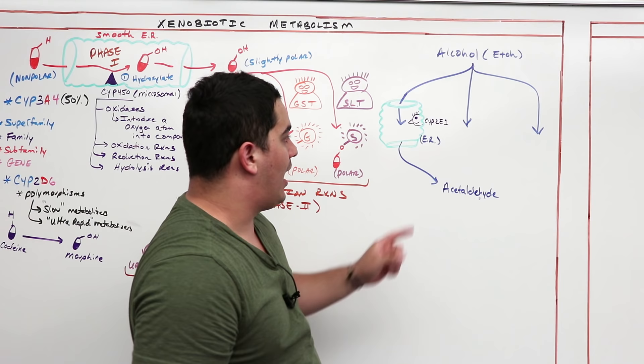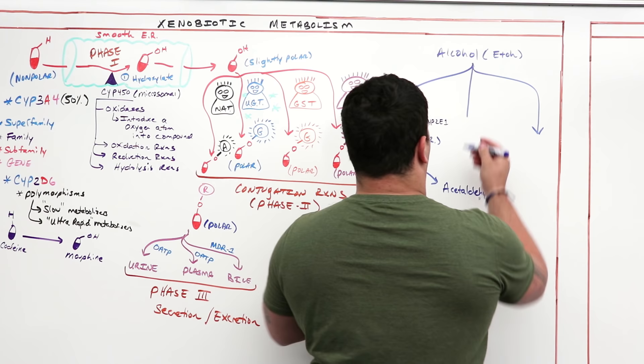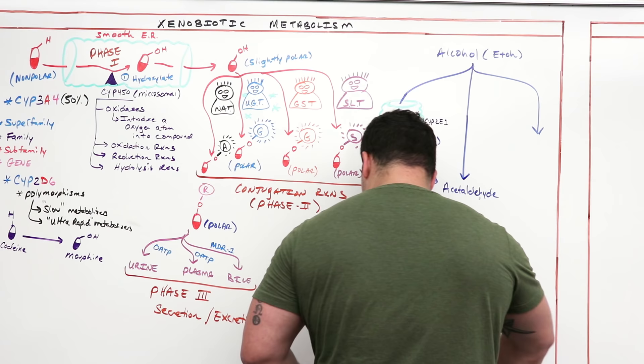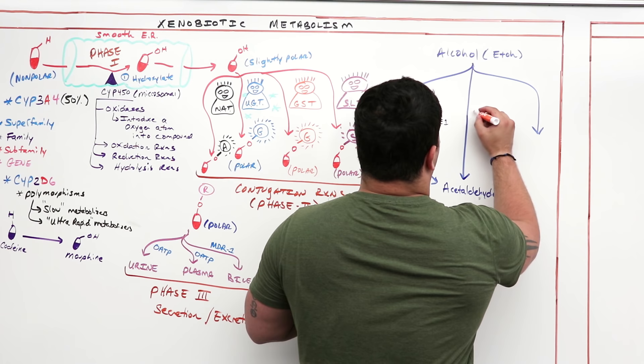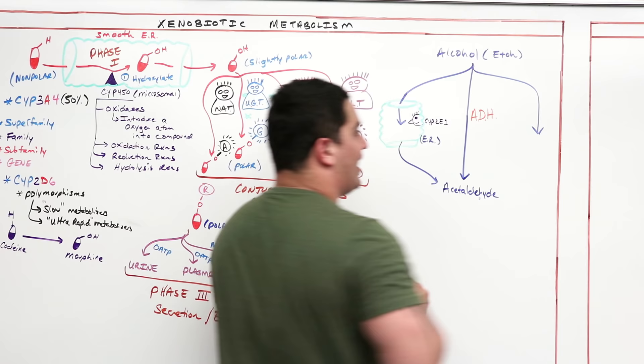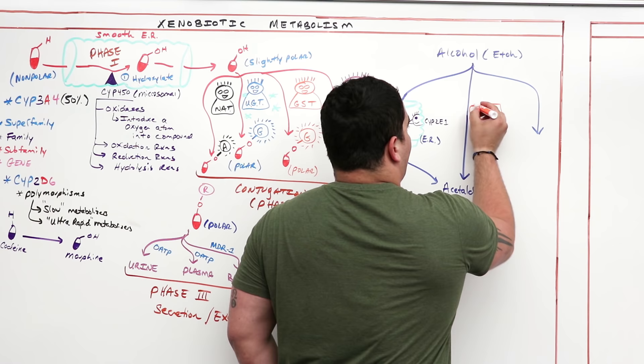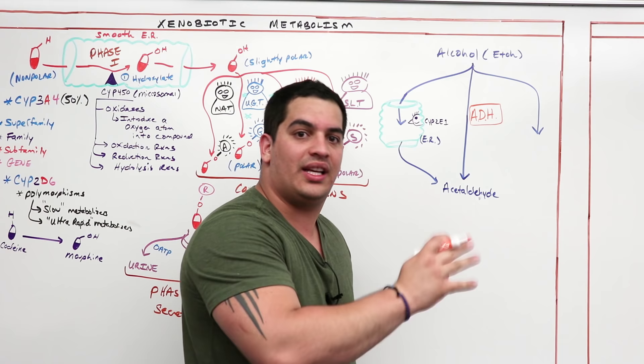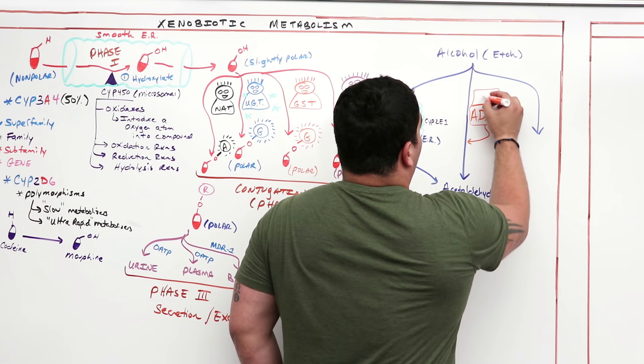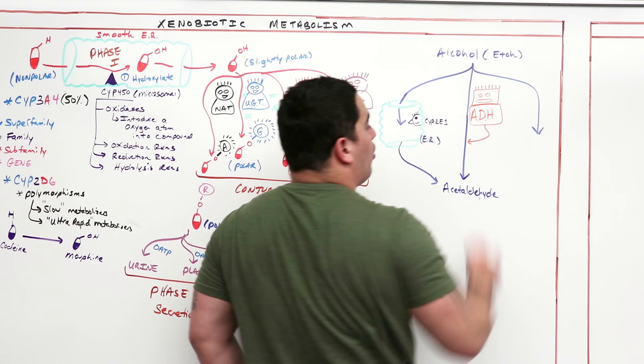The more common pathway — responsible for the large amount of alcohol metabolism activity — uses an enzyme called alcohol dehydrogenase, represented as ADH. Note: this is not the ADH responsible for the posterior pituitary — this is a completely different alcohol dehydrogenase. This enzyme metabolizes alcohol and converts it into acetaldehyde.